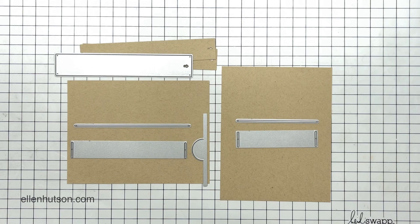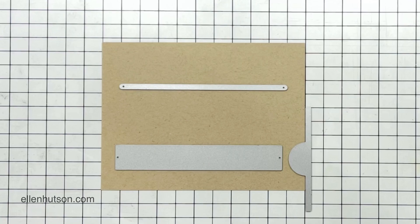This die set includes a thumb notch, a pull tab, and the option to go with a vertical or a landscape layout. In this demonstration, I am going to be using a horizontal or landscape layout.